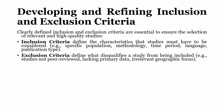Exclusion criteria define what disqualifies a study from being included — for example, studies that are not peer-reviewed, such as conference papers, viewpoints, or editorials; studies that lack primary data or only have secondary data; or studies with an irrelevant geographic focus, such as if you are only focusing on Europe, Asia, or the Middle East.